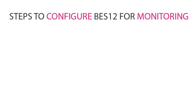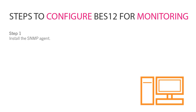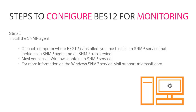Steps to configure BES-12 for monitoring. Step 1: Install the SNMP agent. On each computer where BES-12 is installed, you must install an SNMP service that includes an SNMP agent and an SNMP trap service. Most versions of Windows contain an SNMP service. For more information on the Windows SNMP service, visit support.microsoft.com.